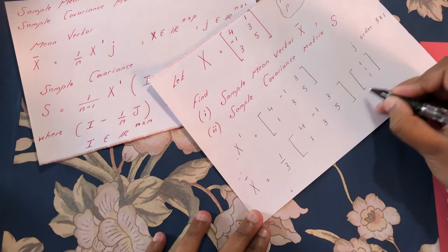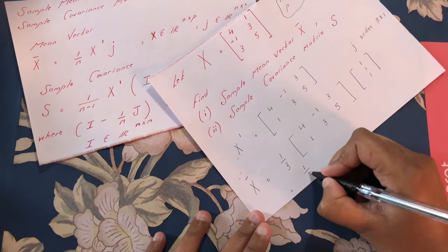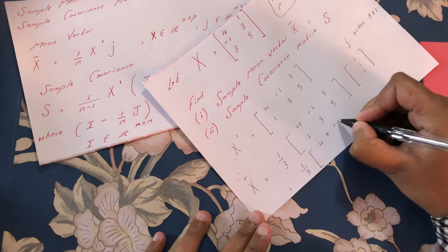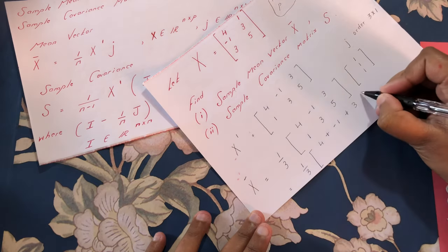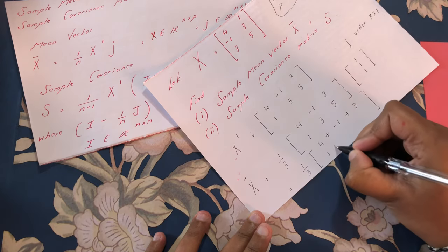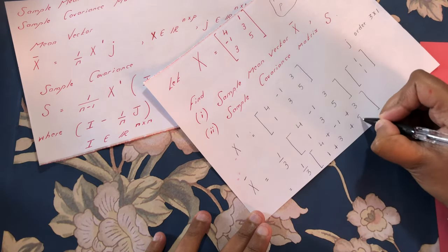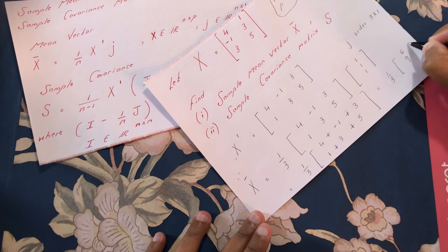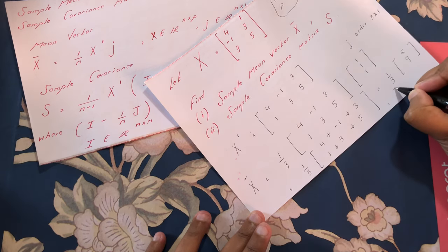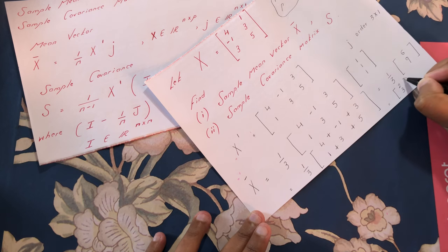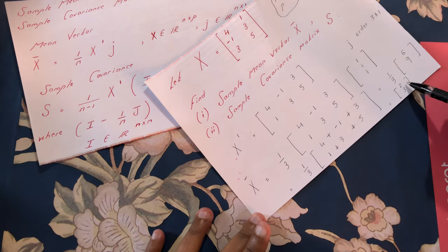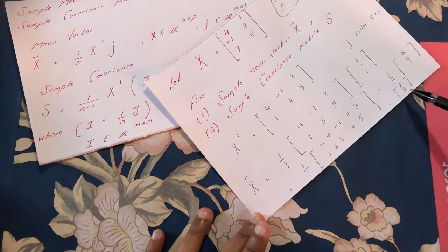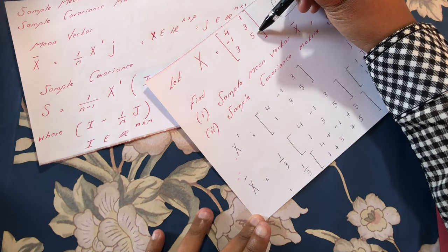We perform matrix multiplication. We have 1 over 3 times rows times columns: (4 plus minus 1 plus 3) and (1 plus 3 plus 5). We simplify to get 6 and 9. Scalar multiplication gives us the vector 2, 3. So the mean vector x-bar has 2 representing the mean of the first variable and 3 representing the mean of the second variable.